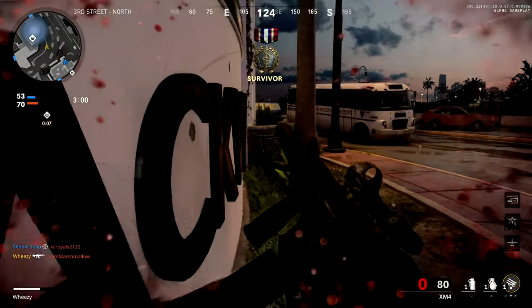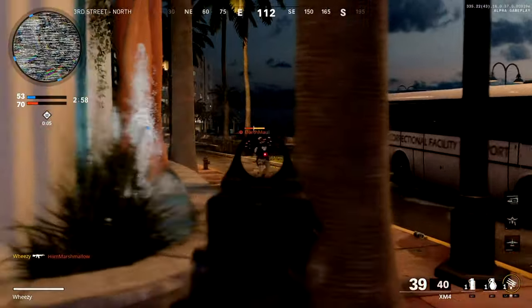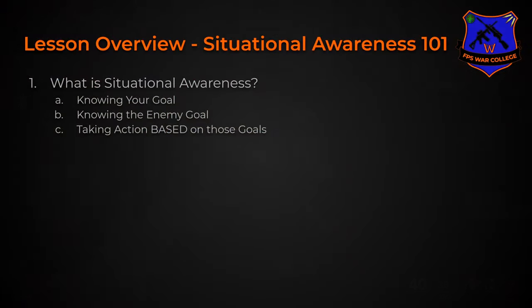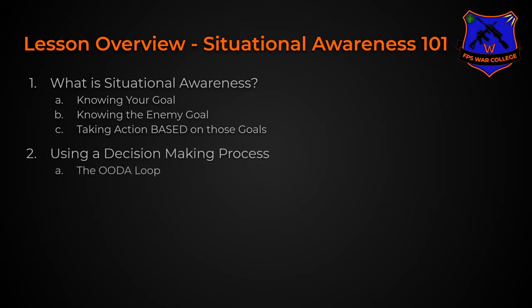How to focus on knowing what we want to accomplish, what the enemy is trying to accomplish, and how we should act based on those things. Additionally, we're going to focus on using a decision-making process. The two we'll discuss are the OODA loop, which we'll cover briefly, and the awareness cycle — a concept I've created that is simpler so you can make this process fast and efficient.